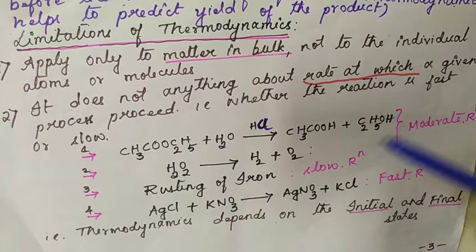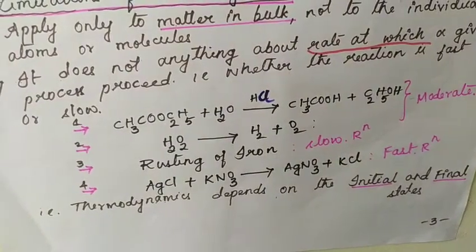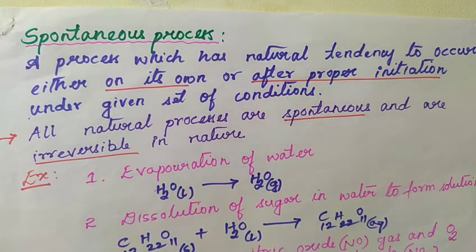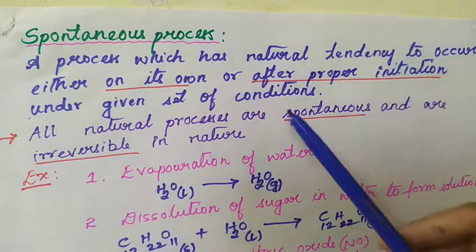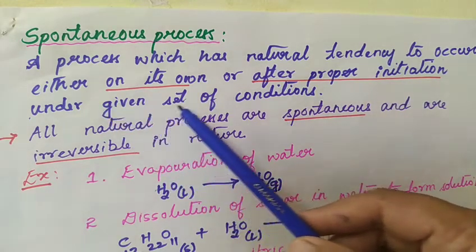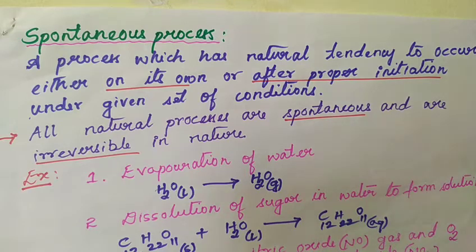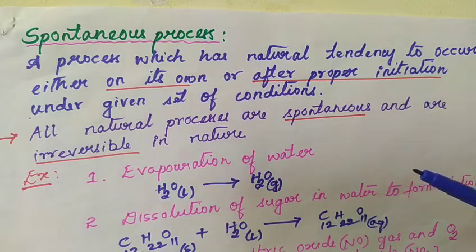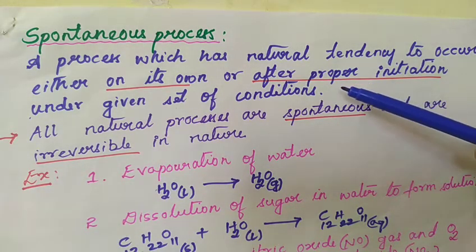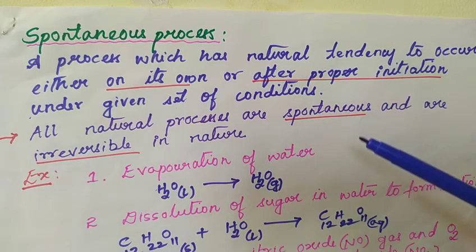Thermodynamics only says whether any reaction occurs on its own or not — that is why thermodynamics depends on the initial and final state. A spontaneous process is defined as: a process which has a natural tendency to occur either on its own or after proper initiation, under given set of conditions. In simple words, any process — physical or chemical — which occurs on its own is known as a spontaneous process. Some spontaneous processes occur with proper initiation and some occur without any initiation.